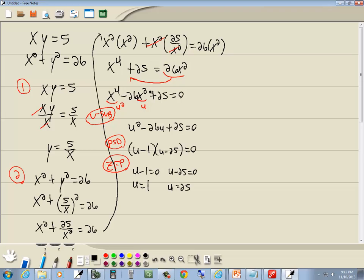Well, now we need to plug what we said u was equal to back in. We said u equals x squared, so we're going to put in x squared for the u now. So we've got x squared equals 1, and x squared equals 25.